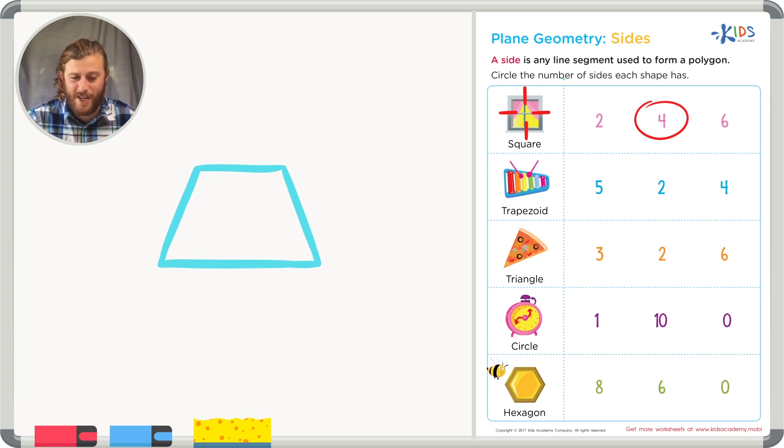My trapezoid has one, two, three, four sides. And the trapezoid on the worksheet also has one, two, three, four sides. A trapezoid is a four-sided shape, or a shape with four sides.